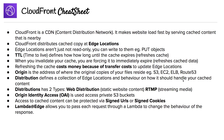Origin is the address of where the original copies of your files reside. That can be S3, EC2, or ELB. Then you have distribution, which defines a collection of edge locations and the behavior on how it should handle your cached content.